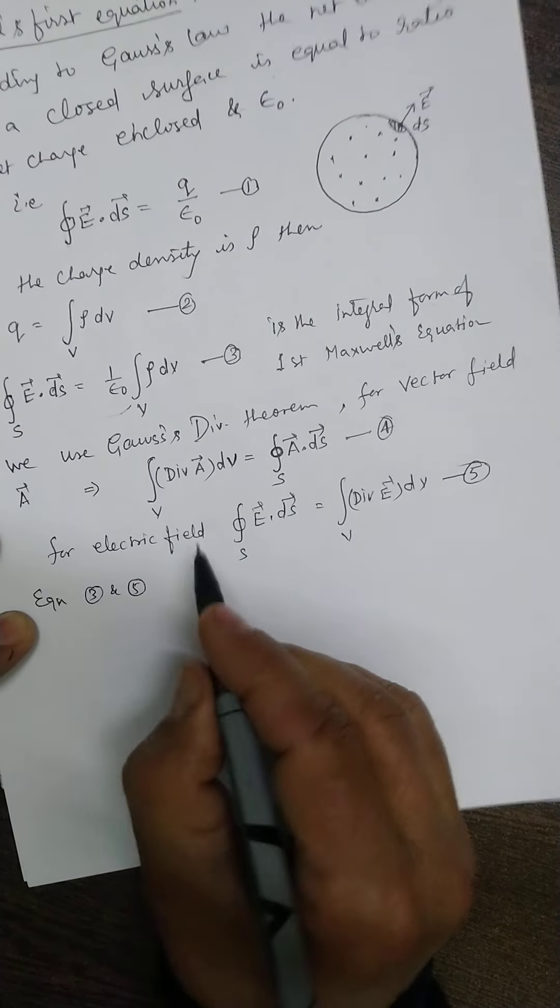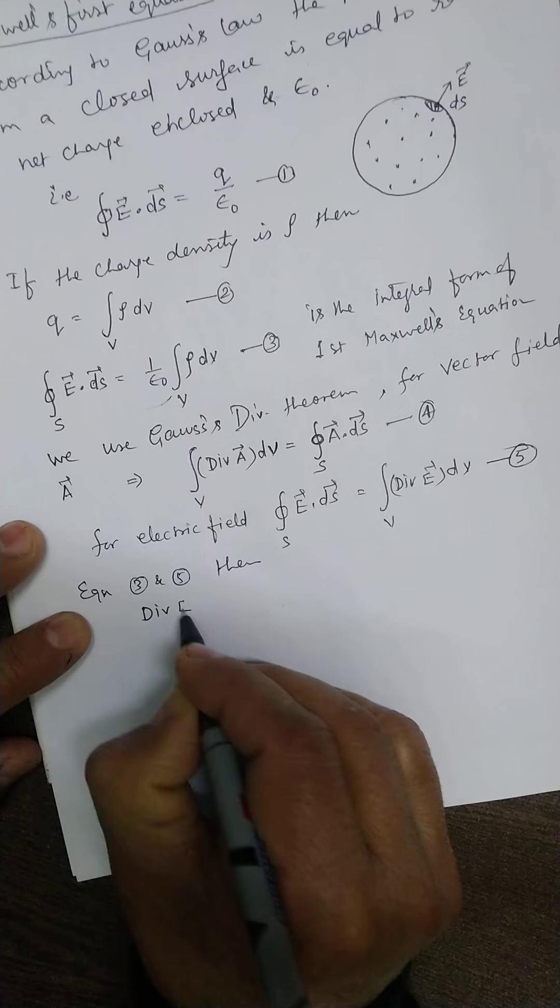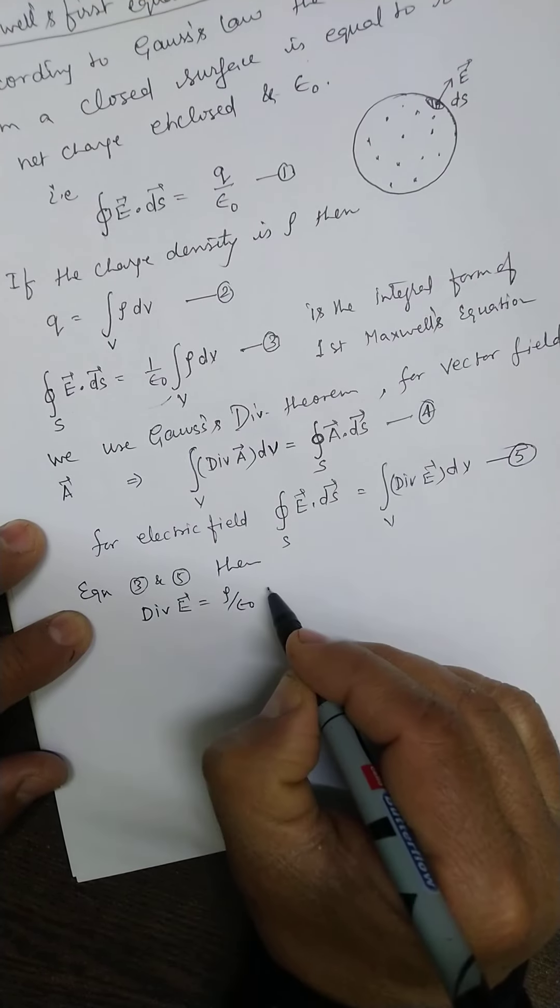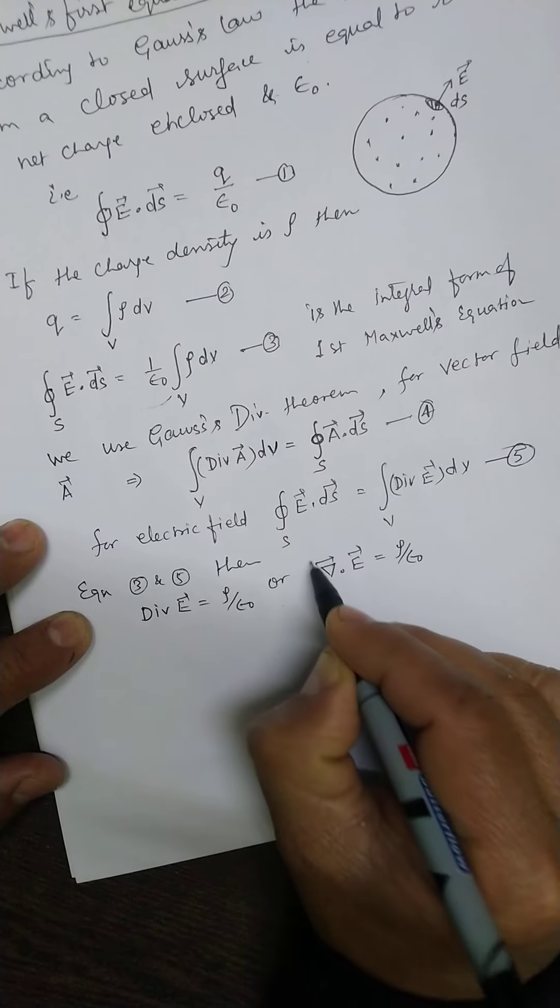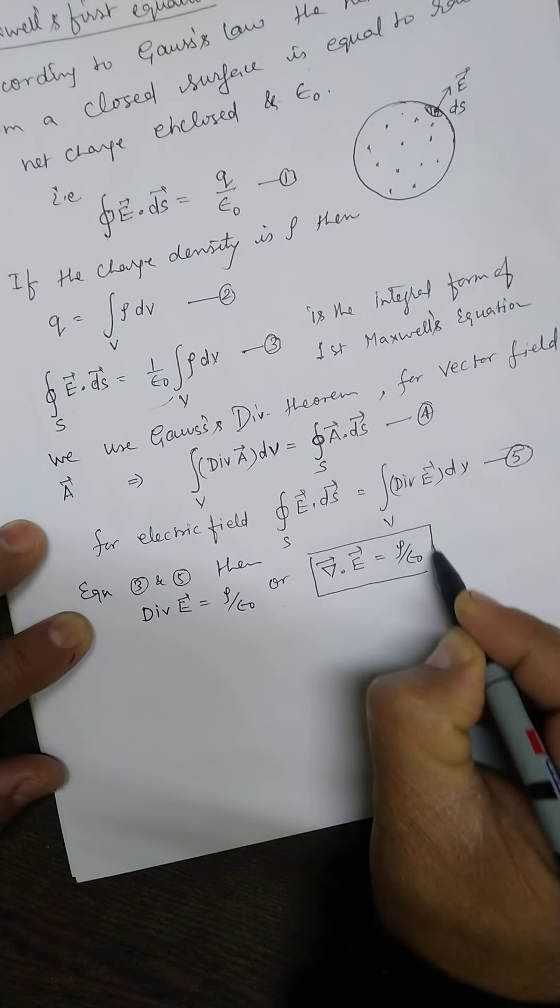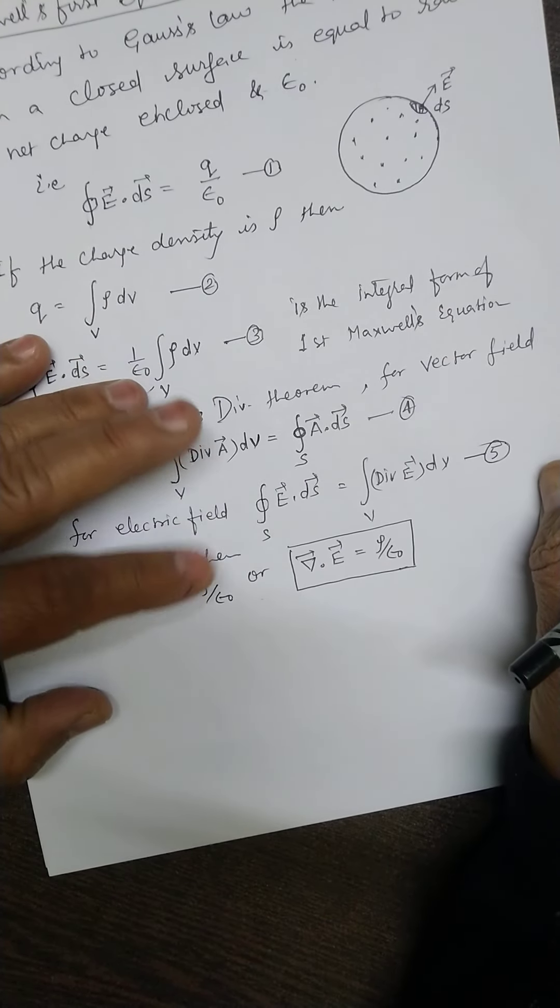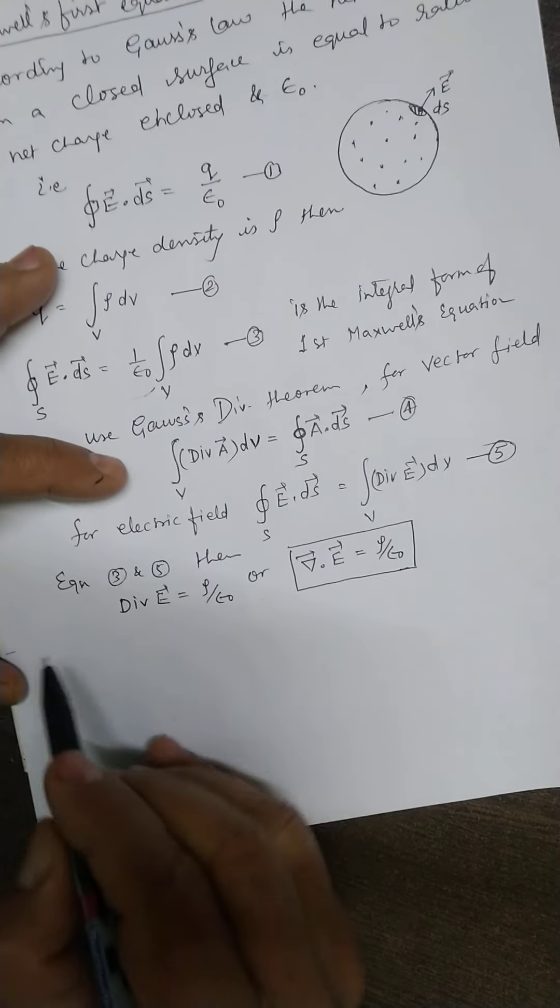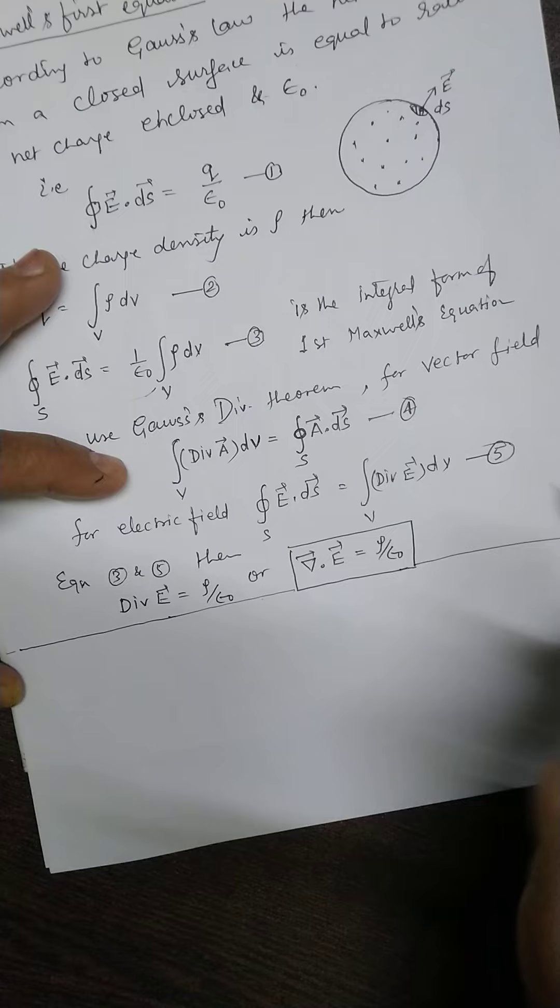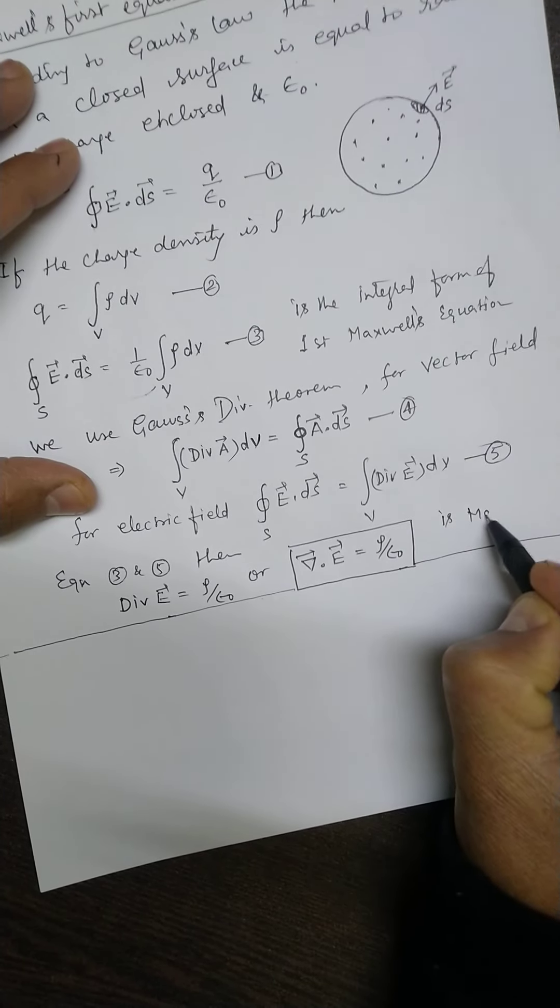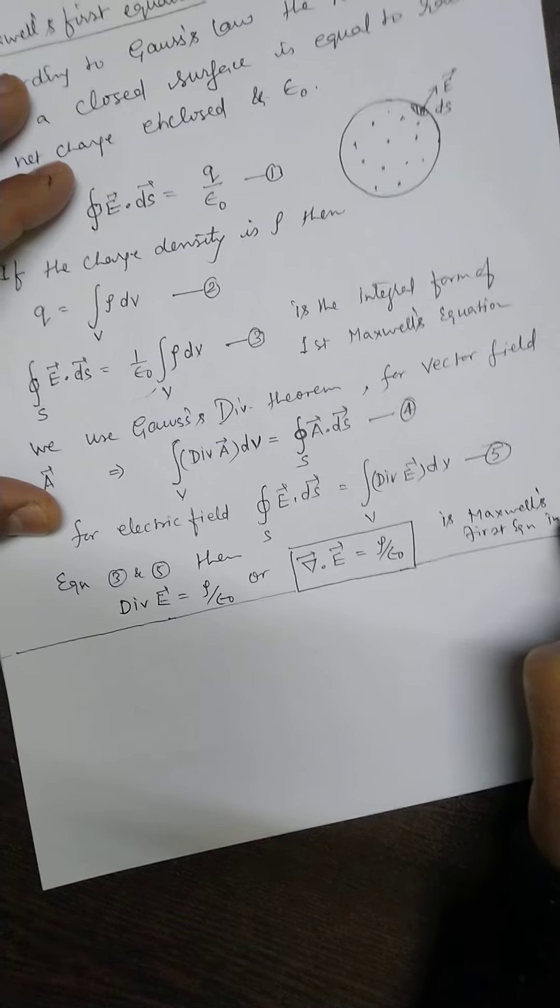When I equate, I will get divergence of E which is equal to rho upon epsilon 0. This is what the Divergence Theorem gives us. This is called Maxwell's first equation in its differential form.